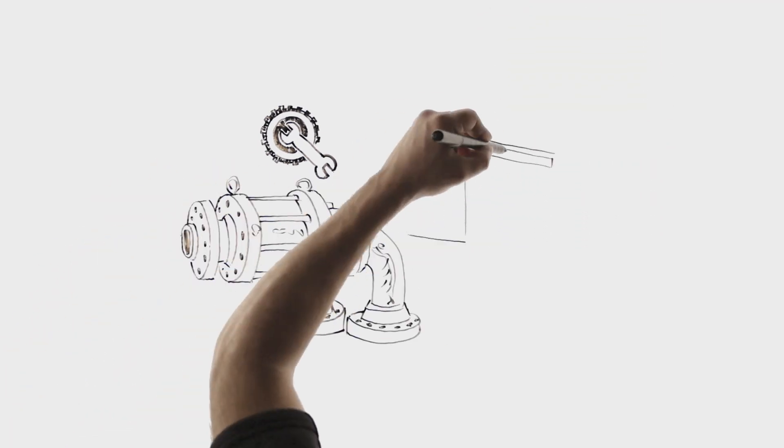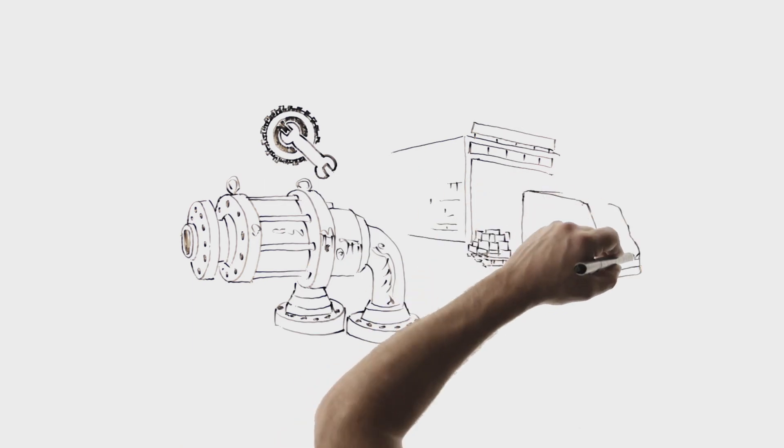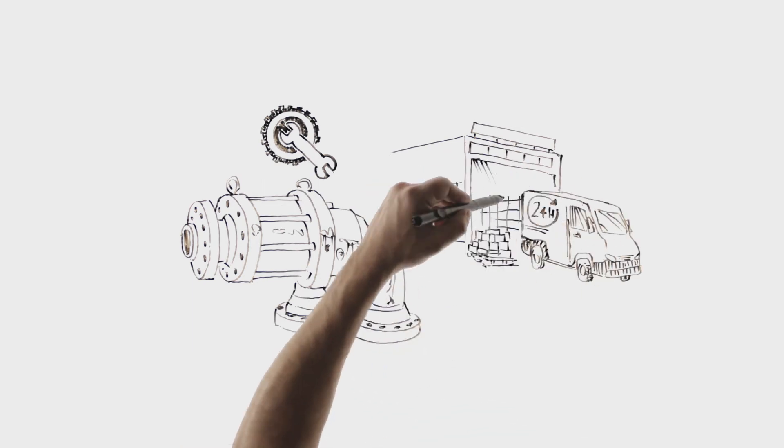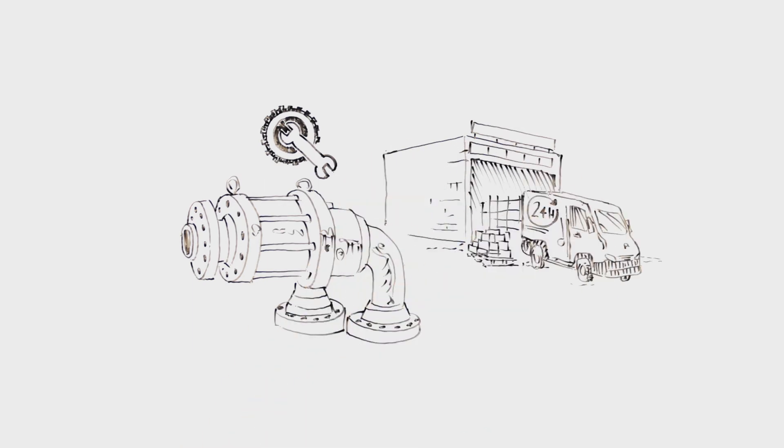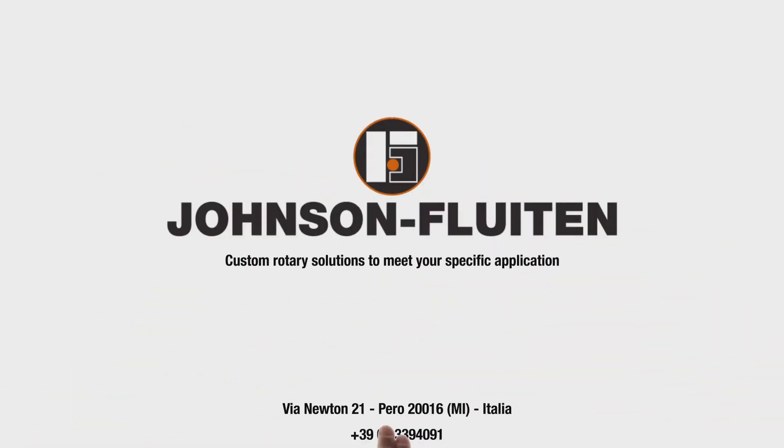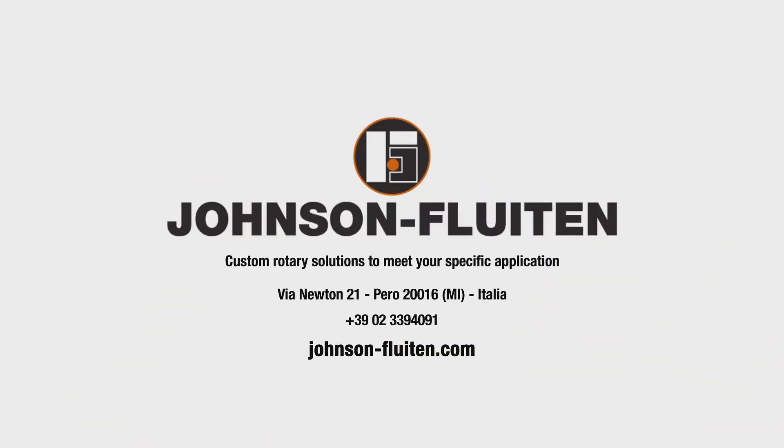We can supply standard products from the warehouse to our customers within 24 hours after order receipts. Johnson Fluitton – custom rotary solutions to meet your specific application.